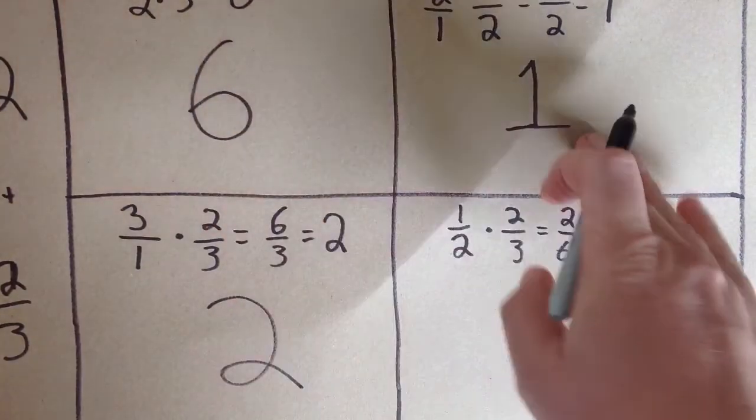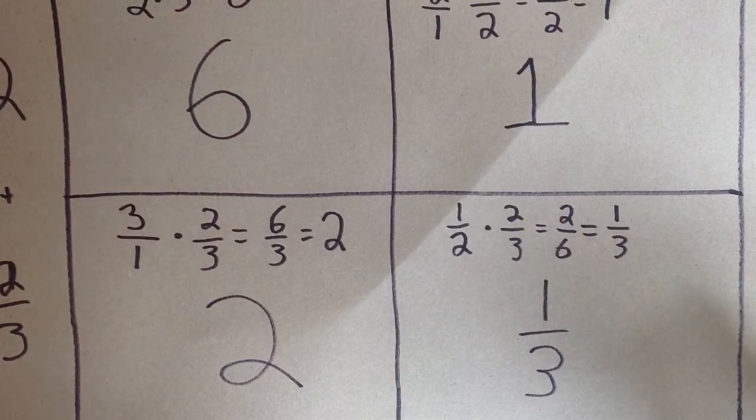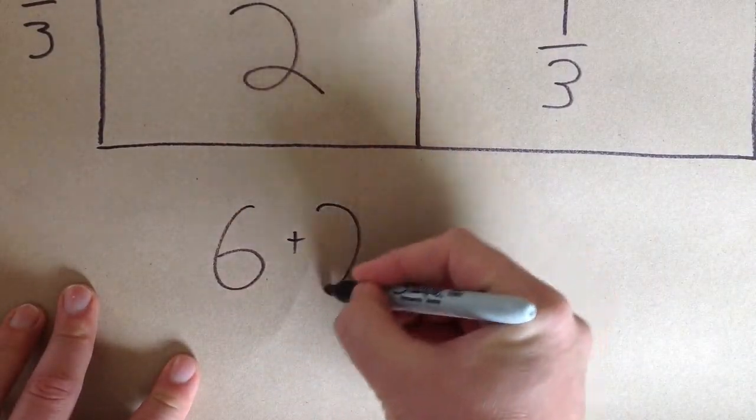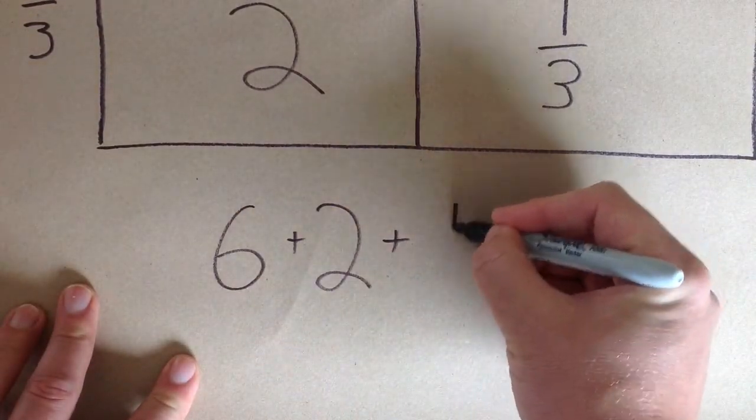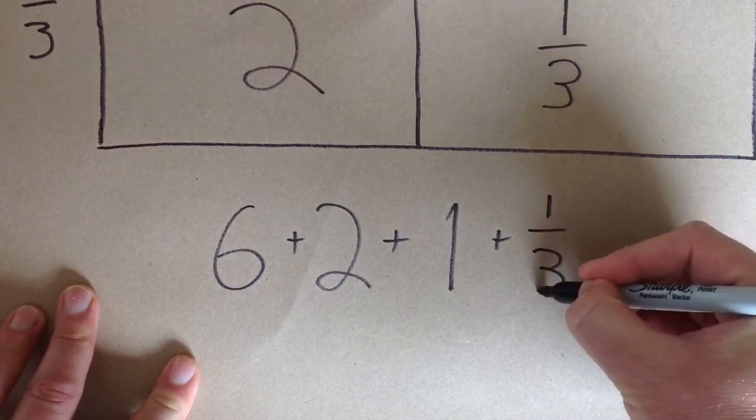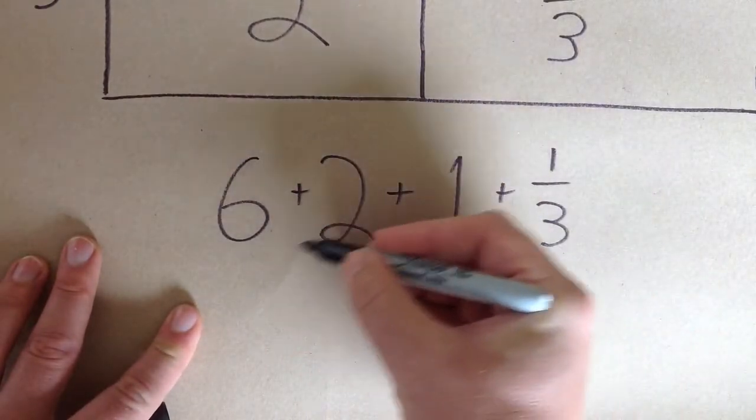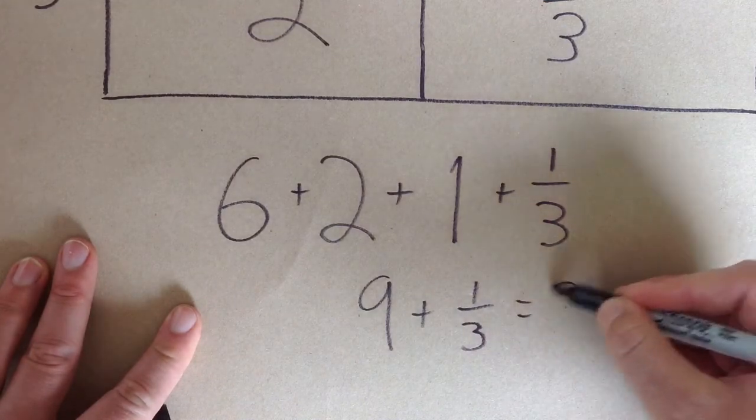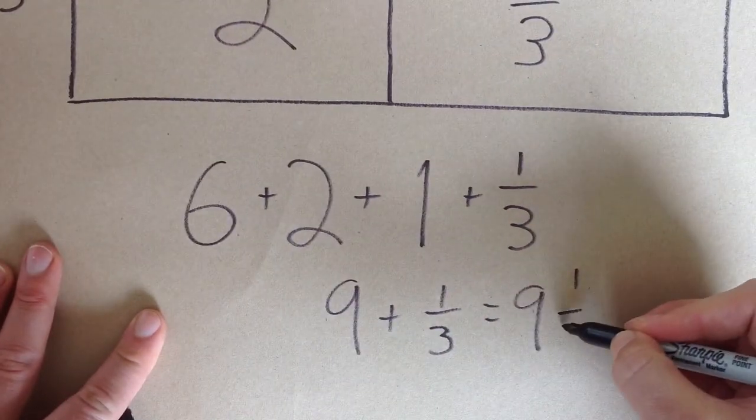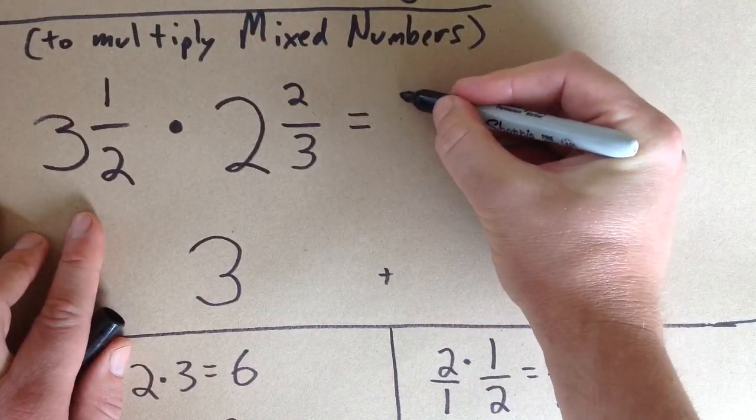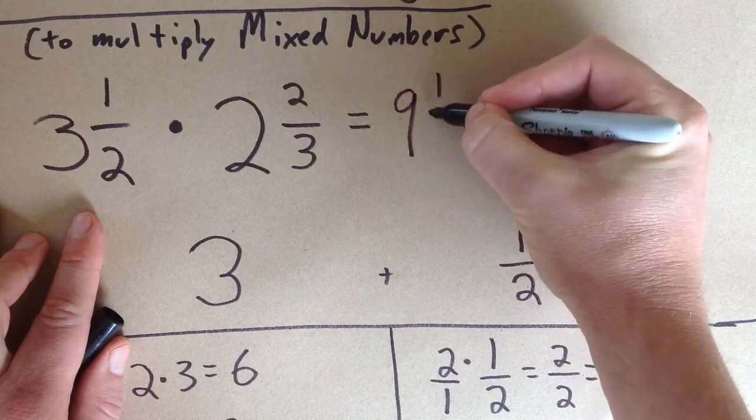Now we have the areas of all four of the squares, and all we need to do is add them up. So I have 6 plus 2 plus 1 plus ⅓. So this will combine 6 plus 2 plus 1 equals 9, and then 9 plus ⅓ gives me 9⅓. Therefore, 3½ times 2⅔ is 9⅓.